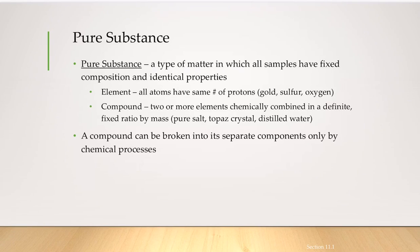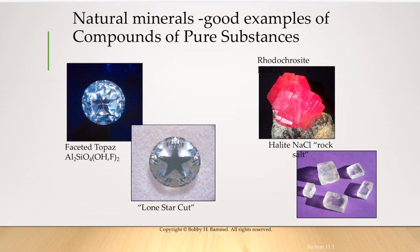Compounds are made of two or more elements combined in a definite fixed ratio by mass. A compound can be broken into its separate components only by chemical processes. Some good examples of compound pure substances include rhodochrosite, halite (NaCl), and topaz.